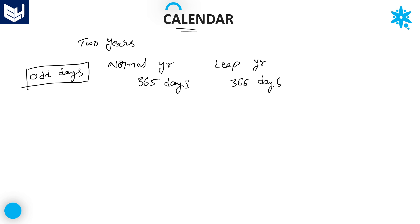Odd days is nothing but, after removing all the weeks from the given days, whatever the extra days which are left over, those are called odd days. For example, every normal year consists of 365 days.